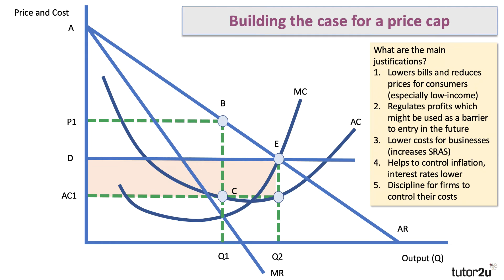Price capping is also a way of controlling the rate of inflation, which might mean that central banks keep interest rates lower. A fifth point is quite important: if you cap the price at D, the firm's profits go down, but they could respond by trying to control their costs — raising productivity, becoming more productively efficient. If they shift their MC and AC curves down to the right, then even at the capped price they can make higher profits. You might want to visualise how lower costs at the capped price D would lead to higher profits in a diagram.